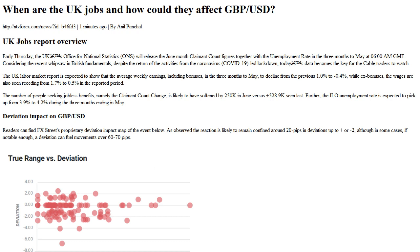Considering the heavy push by the Tory government, the British Jobs Report could keep the GBPUSD pair directed towards June month's top near 1.2815. However, hopes of witnessing disappointments from the data, followed by the pair's extended weakness, can't be ruled out as UK retailers continue to trim staff amid fears of economic slowdown and less demand.